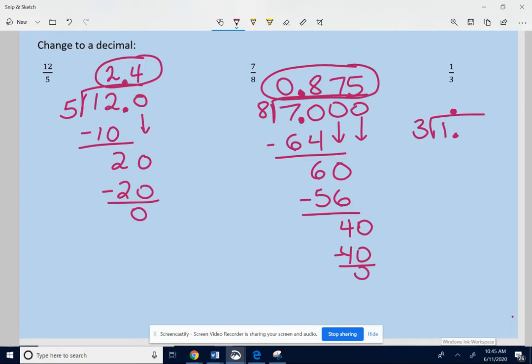Decimal point after the 1 and even above it on the fraction bar. 3 won't go into 1. 3 will go into 10, 3 times. 3 times 3 is 9. Subtract. You get 1. Just add a 0 and bring that 0 down.